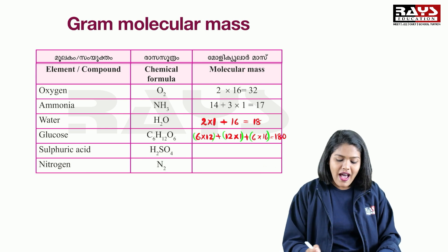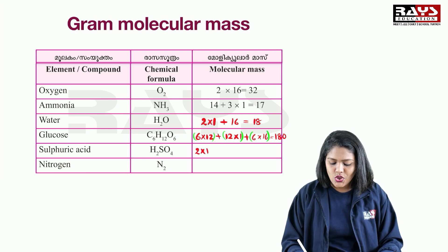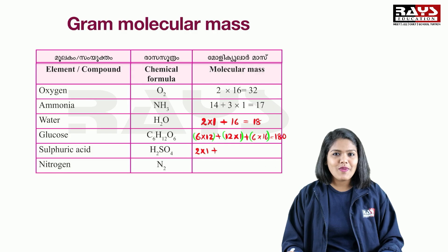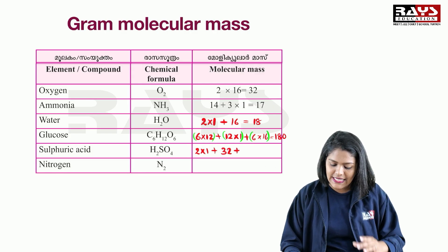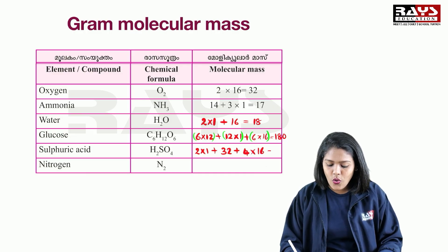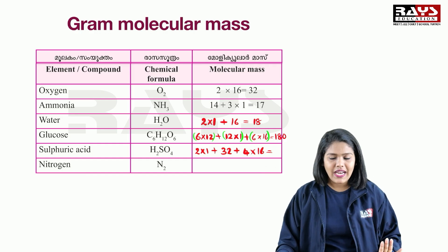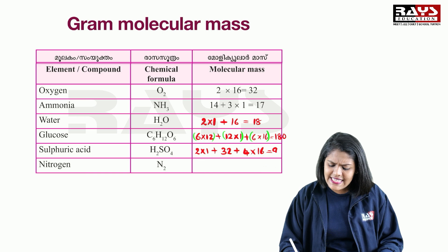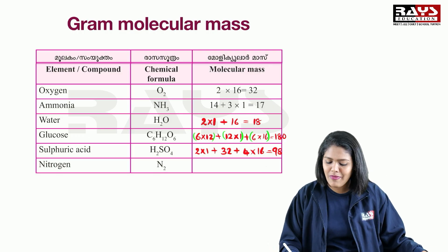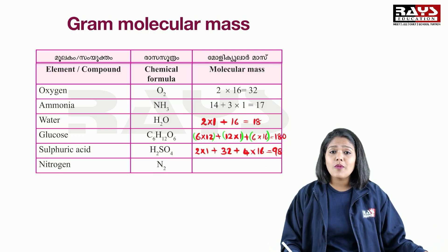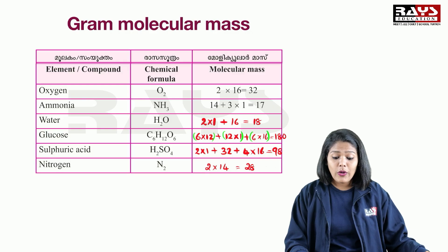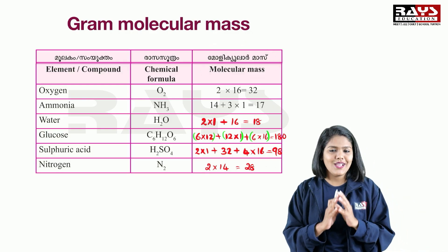Next one is sulfuric acid, H2SO4. 2 hydrogen: 2 × atomic mass of hydrogen (1). Plus sulfur atomic mass: 32. Plus 4 oxygen: 4 × 16 = 64. Total value is 2 + 32 + 64 = 98. So H2SO4 molecular mass is 98. Next, nitrogen N2 is a diatomic molecule. Nitrogen atomic mass is 14, so 2 × 14 = 28. That is the molecular mass of N2.